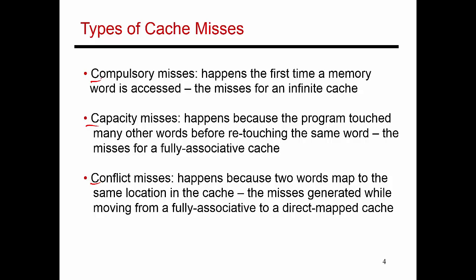The first category is compulsory misses. When I touch a block for the first time, there's no way that data is already going to be in my cache — that's a compulsory miss, and there's no way to avoid it.